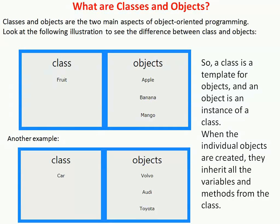An object is an instance of a class. A class is a template or blueprint from which objects are created. From a class we can create an object. For example, if car is a class, then the objects of car are different types of cars — Volvo, Audi, Toyota. These are some objects, each with a particular identity.